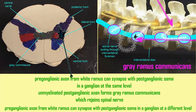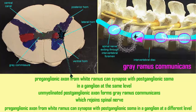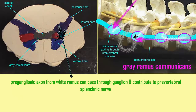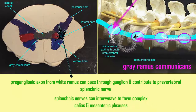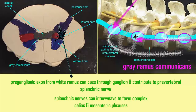Sometimes the preganglionic axon, instead of synapsing in the ganglion at the same level of the spinal cord, can travel to nearby spinal cord segments so that the ganglion would be just above or beneath the level of the preganglionic soma. The preganglionic axon can also pass through the sympathetic chain ganglion without synapsing there, and thus forms a different type of nerve — not the paravertebral nerve alongside the vertebral column, but the prevertebral splanchnic nerve, anterior to the vertebral column.